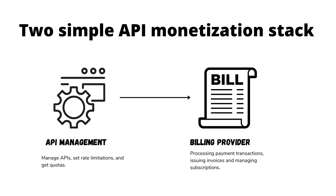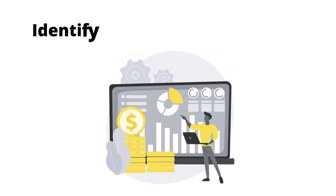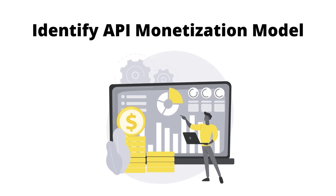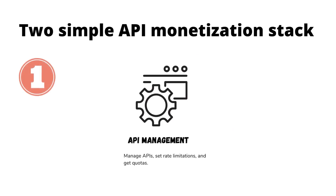There is an effortless way to monetize your API that consists of two components: an API management service and a billing provider. To get started, identify your API monetization model as a first step. Next, manage your APIs with an API gateway and set throttling limits and quotas to your APIs.